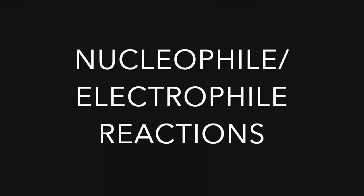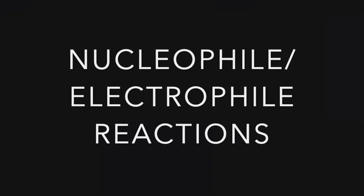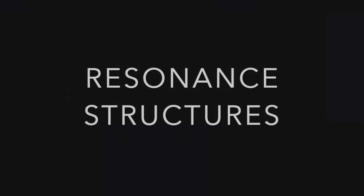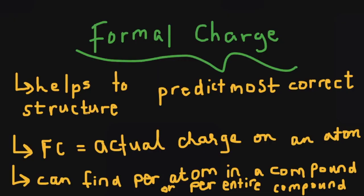In today's video, we're going to be talking about formal charge, nucleophile-electrophile (or otherwise known as acid-base) reactions, and resonance structures. First, let's talk about formal charge. Formal charge is the actual charge on an atom. We can use it to help predict the most correct structure of a compound, and it can be found per atom in a compound or for the entire compound to find the overall net charge.